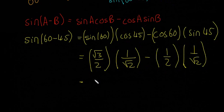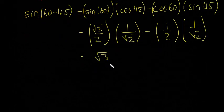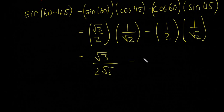So you're going to get root 3 over 2 root 2 minus 1 over 2 root 2. We have a common denominator, so you can change that into root 3 minus 1 over 2 root 2.